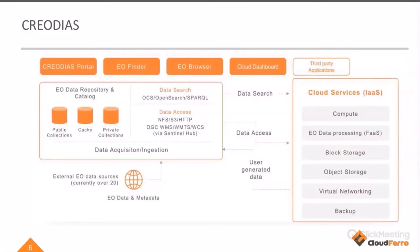CreoDIAS platform was built for the European Space Agency, for the European Commission, and it's dedicated to Copernicus — it was actually built for the Copernicus scientific program. The Earth observation data available on CreoDIAS are mainly from the Copernicus program, from the Sentinel missions, plus other data including very high resolution data. CreoDIAS portal is a public cloud, so everyone can make use of it and the data repository. Hidden under the CreoDIAS portal are cloud services: compute, Earth data processing, block storage, object storage, virtual networking, and backup.